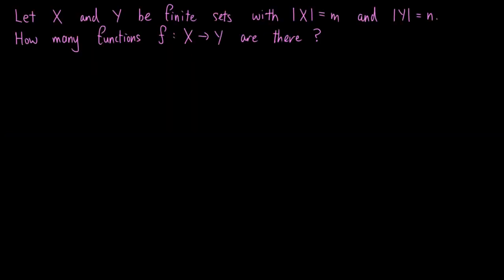Let x and y be finite sets, with the size of x equals m and the size of y equals n. How many functions f from x to y are there? First, let's list the elements of x as x1, x2, all the way to xm.